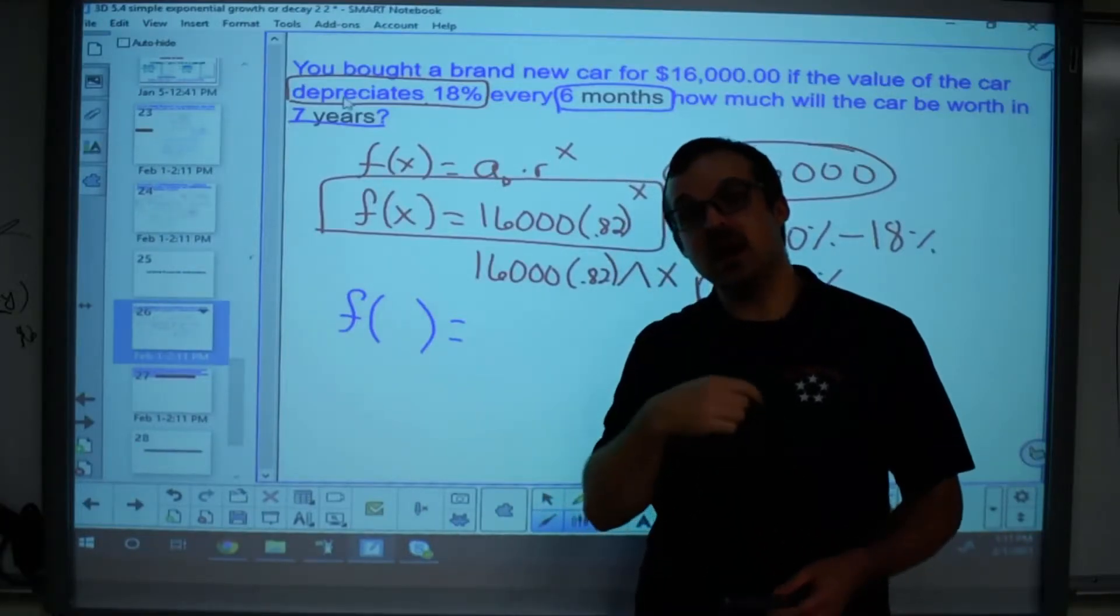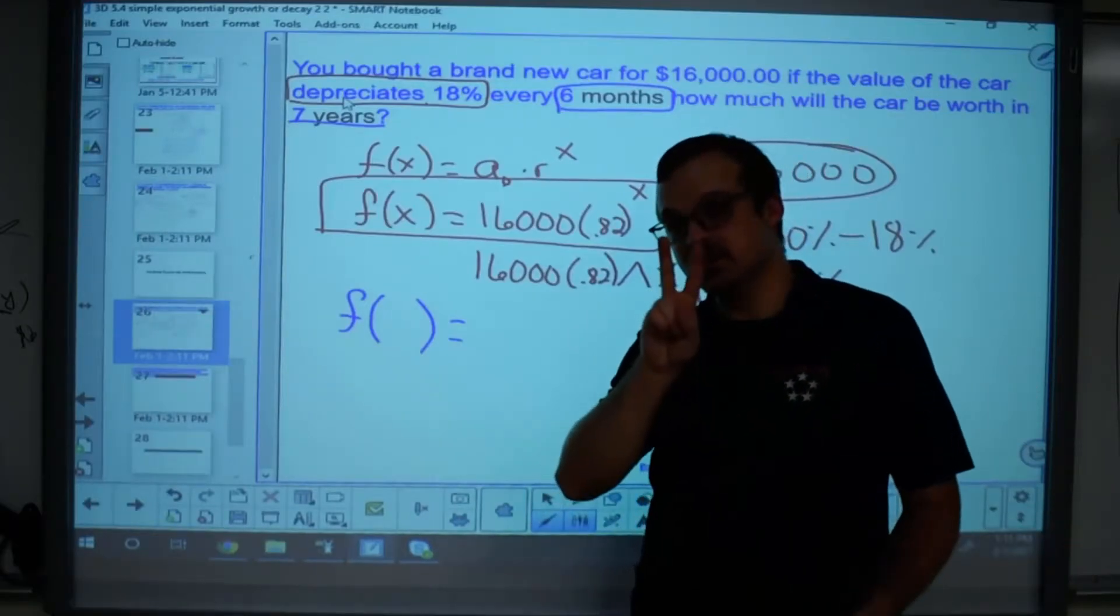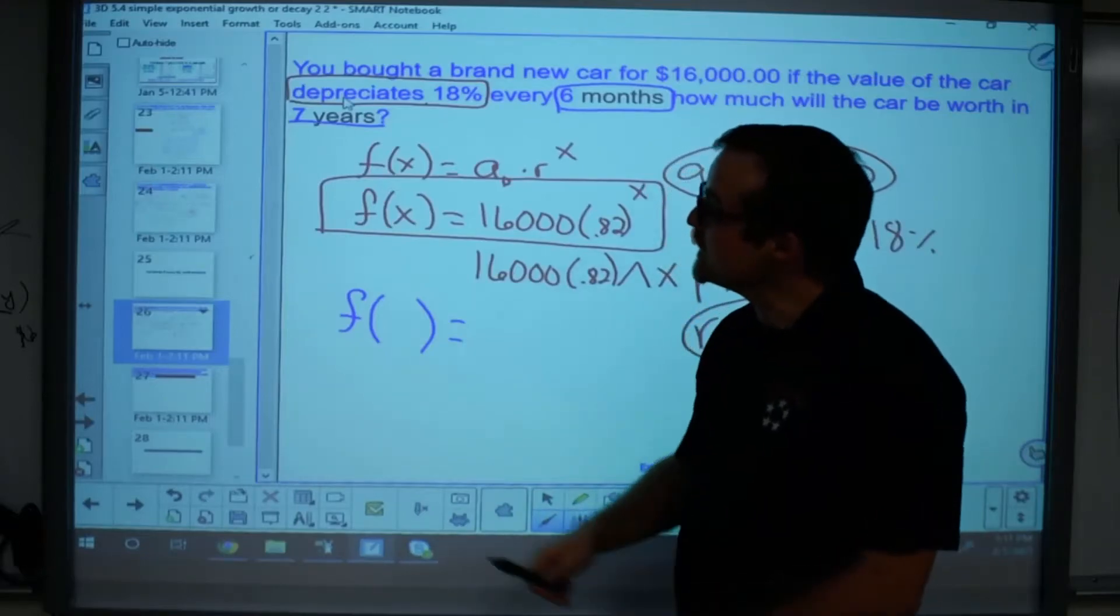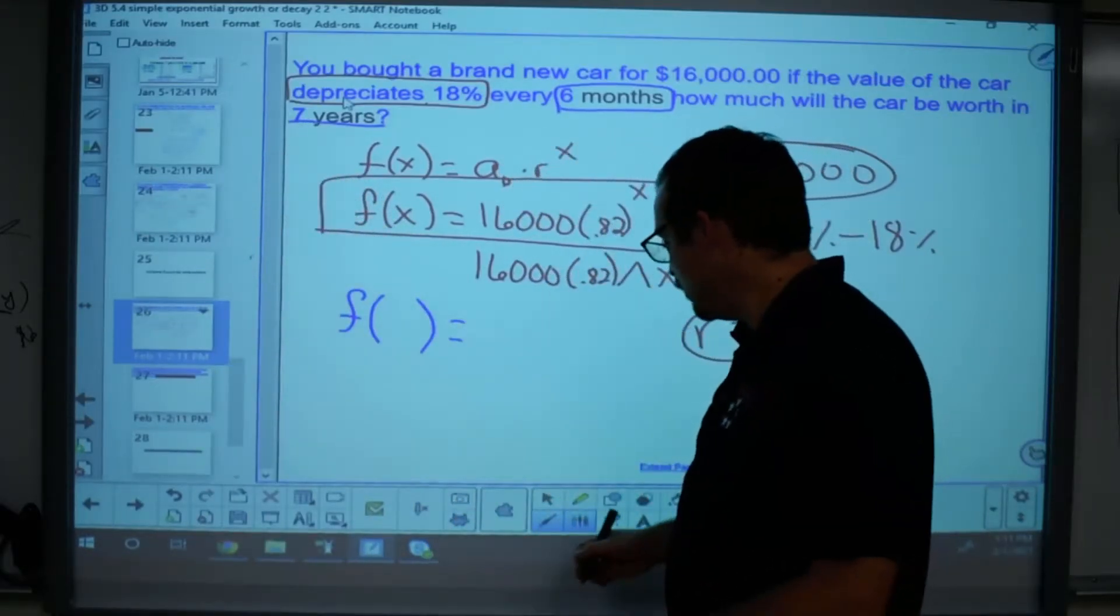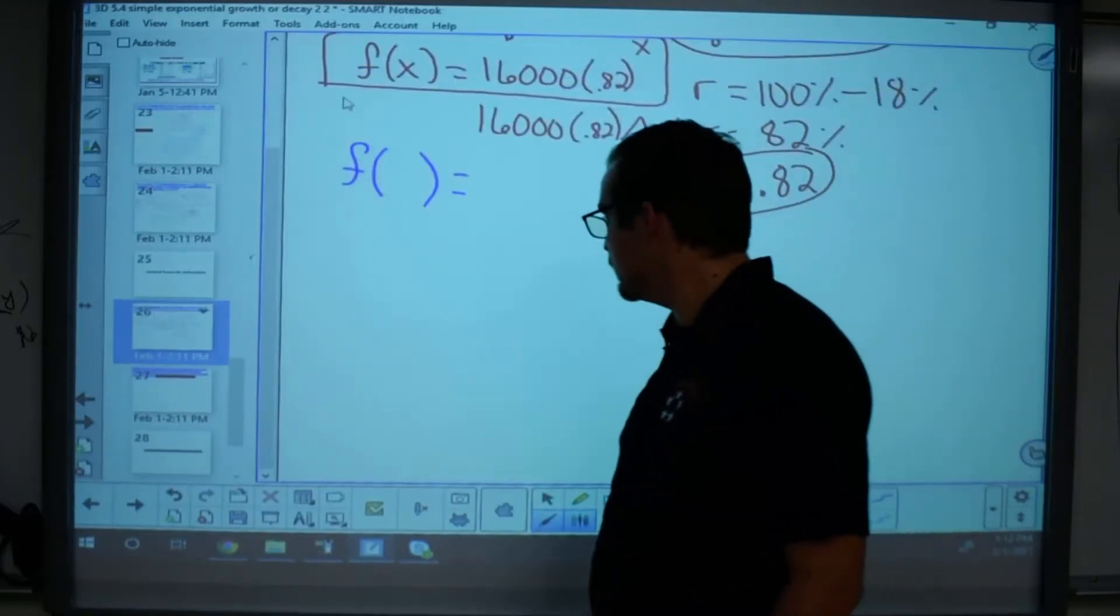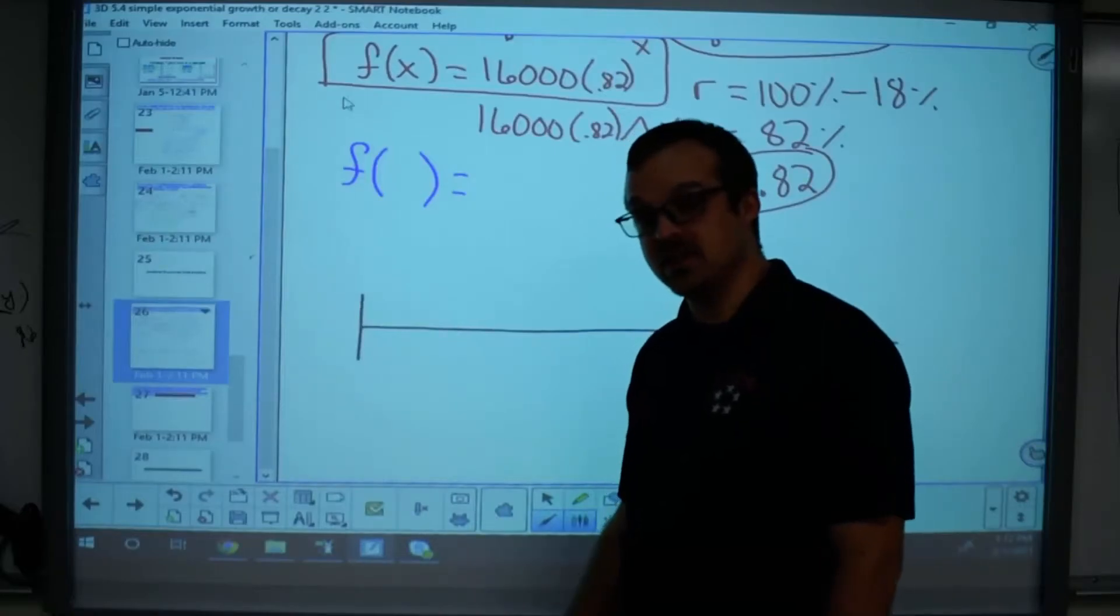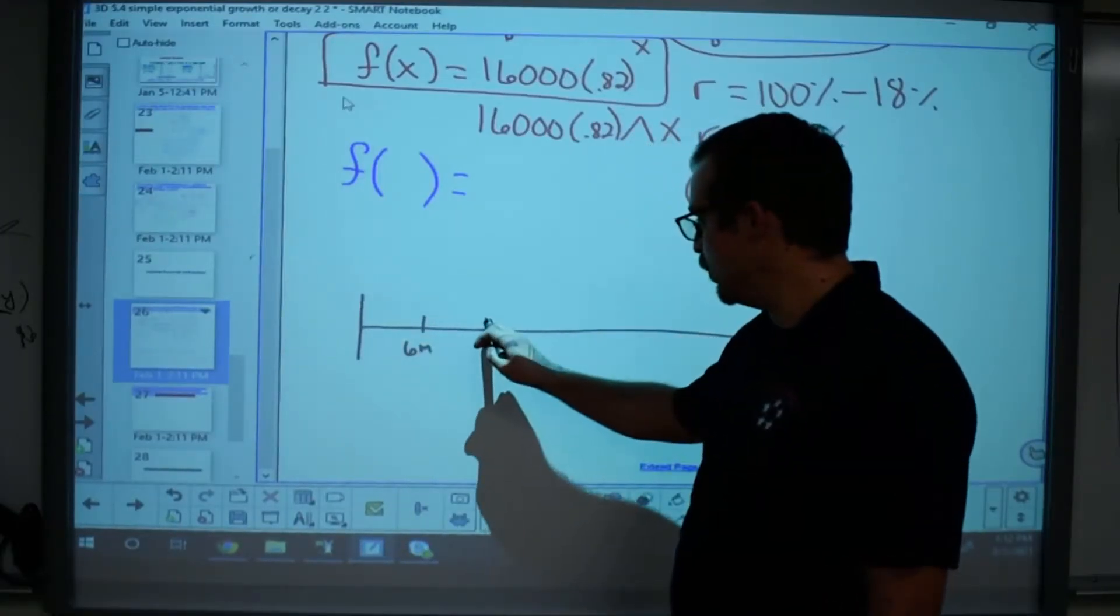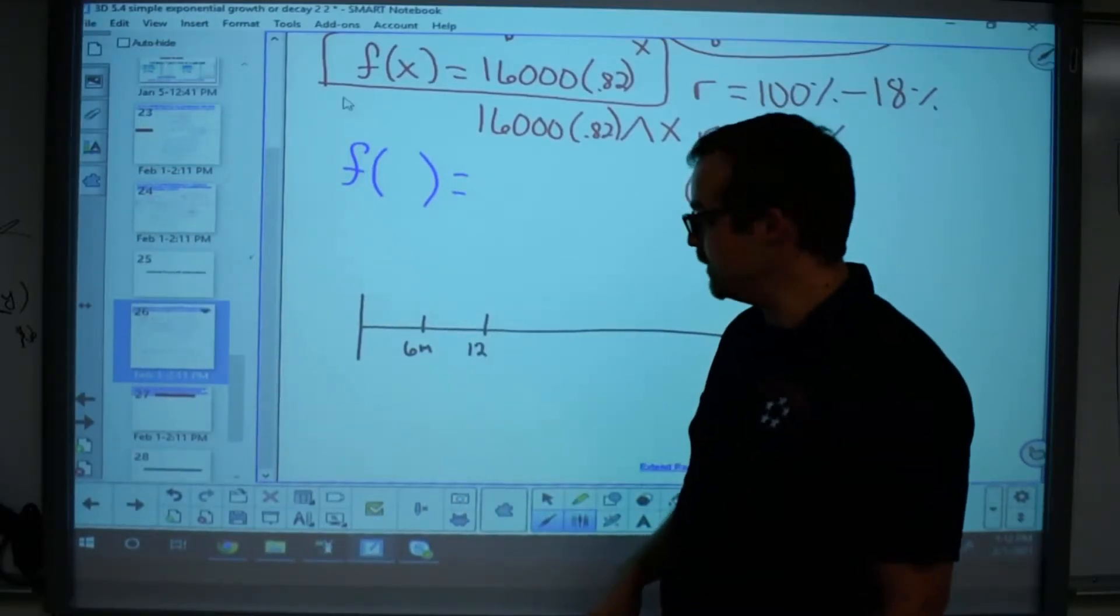So six months goes by, it depreciates. Another six months goes by, it depreciates again. So that's two times it's depreciated in one year. So in seven years, how many times will it depreciate? The only way I can really represent this is maybe a number line really quickly, right? So this is where we're going to start off. We're starting out here at $16,000. Six months passes by, right? Six months passes by and then one year. So that's 12 months. And that's depreciated twice now, right? That's only one year.